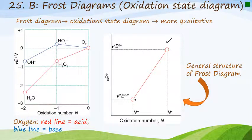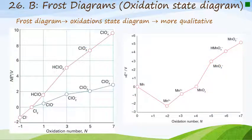Two more examples are shown: the element chlorine on the left and manganese on the right, illustrating what Frost diagrams look like. An example will be done to show how to construct these diagrams.